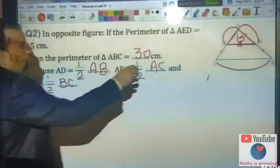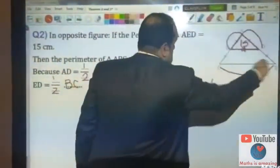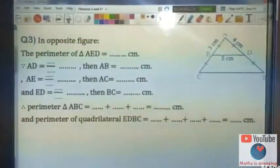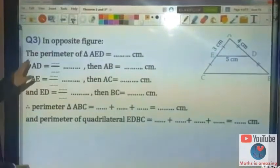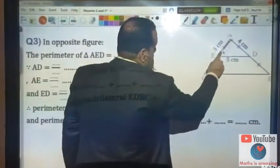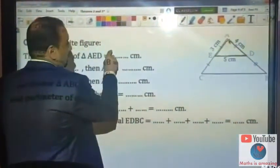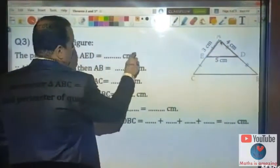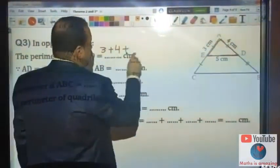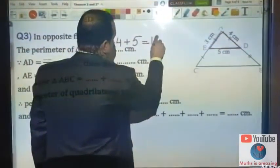Then the perimeter of this triangle is half of the perimeter of this triangle. And the perimeter of triangle AED will be 3 plus 4 plus 5 equals 12 cm.